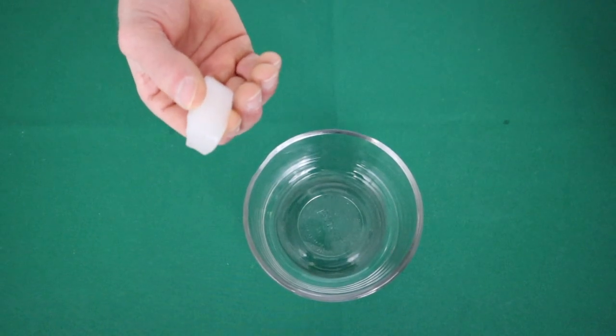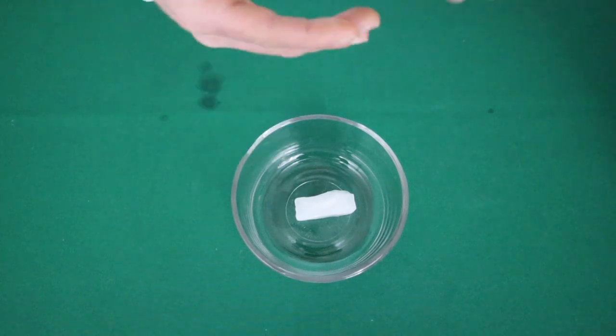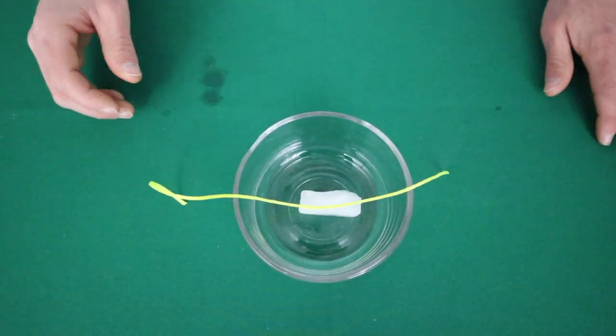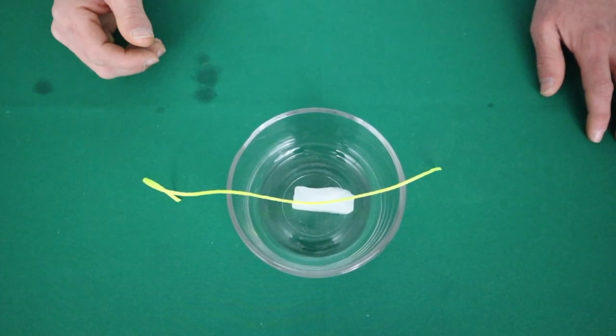So for this experiment we're going to take one piece of ice and put it in our bowl or plate and then take a string and place it on top so that it's touching the ice. And we're going to wait here for 30 seconds and then lift the string and see if the ice stuck to it.